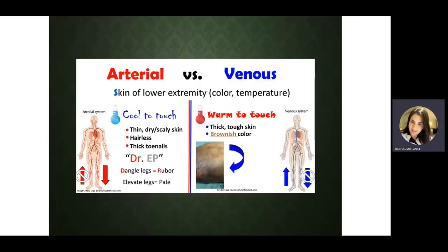A quick comparison to remember: Arterial disease — cool to touch, decreased pulses, thick nails. A helpful mnemonic is 'Dr. EP' for dangle legs: you'll see rubor (reddish color) when dangling, and pale legs when elevated. Versus venous — usually warm to the touch, swollen, brownish color, and thick skin.